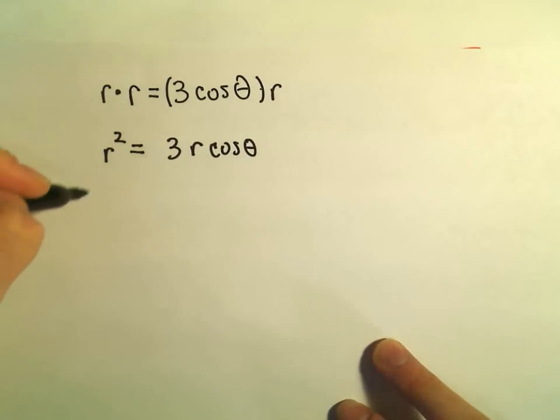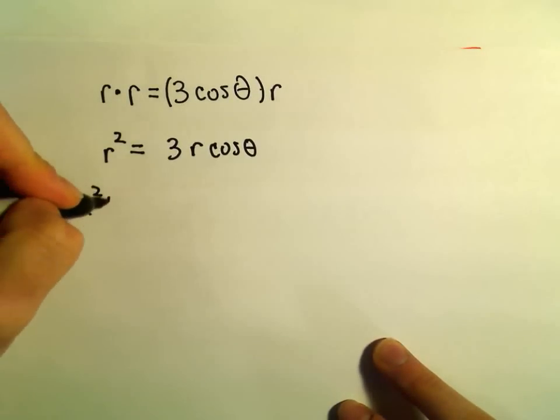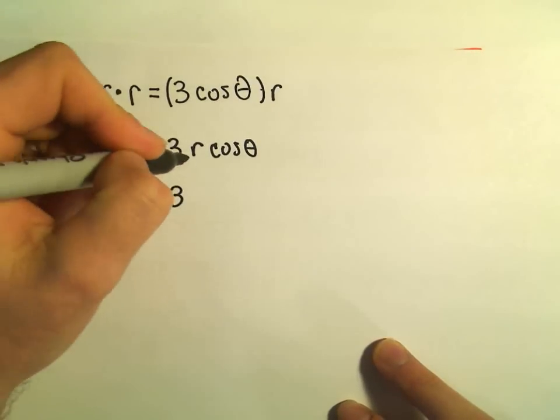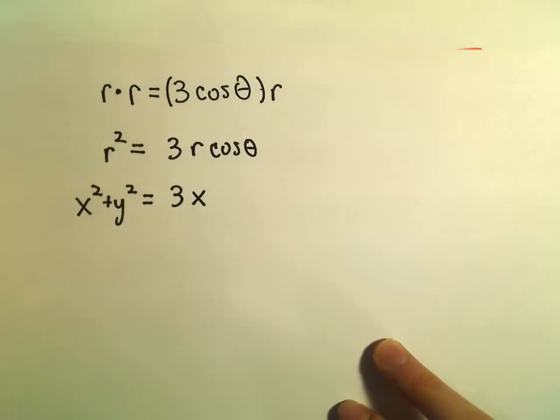But now we can just start using our formula. So r squared is the same thing as x squared plus y squared. r cosine theta, that's the same thing as x.